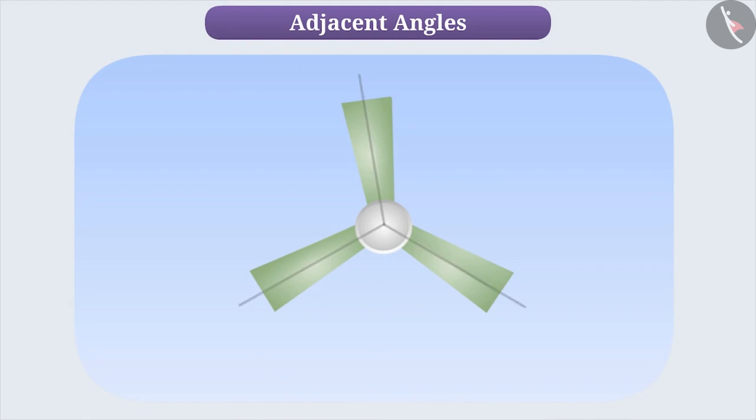If we consider any two angles, they are adjacent angles to each other. But to identify whether two angles are adjacent or not, we need to understand the concept thoroughly. So, let's go through the concept of Adjacent Angles.